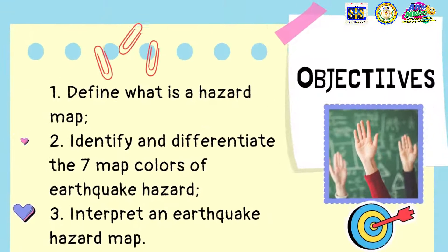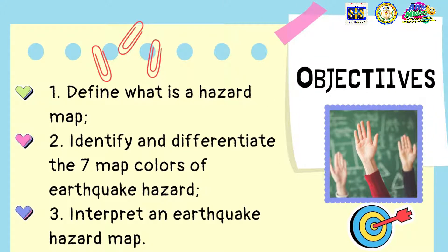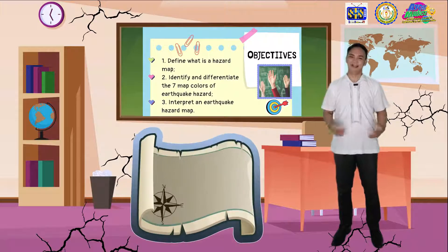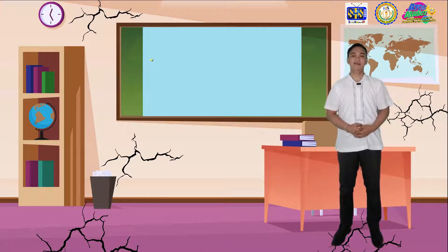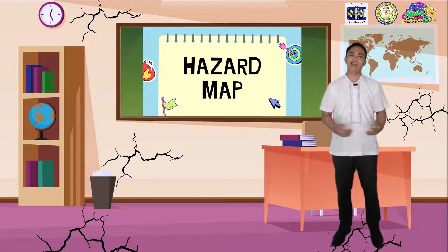Now, I need to get out of this room. What will I need to find a safer place to stay? Absolutely! I need a map. Do you know how to interpret a hazard map? Don't worry! Because we will learn about it today. Please help me find a map by reading the objectives of this day's lesson. Your goal for today is to: 1. Define what is a hazard map. 2. Identify and differentiate the 7 map colors of earthquake hazard. 3. Interpret an earthquake hazard map.